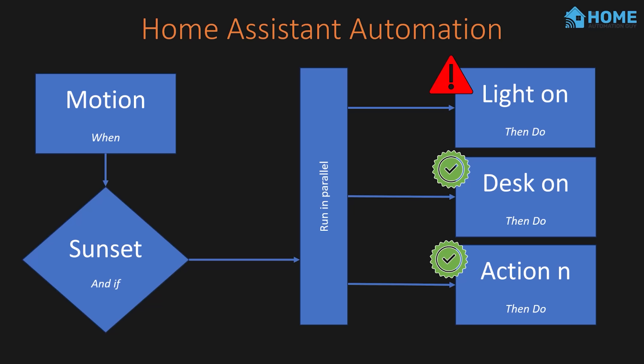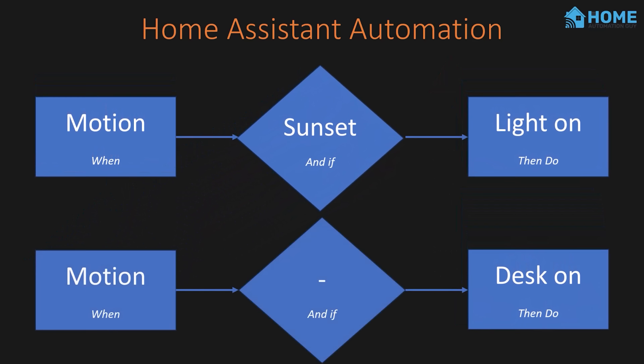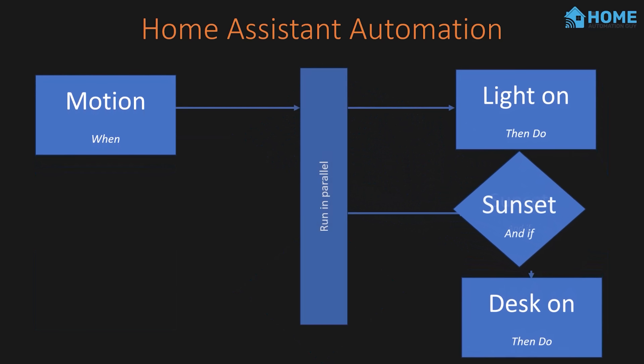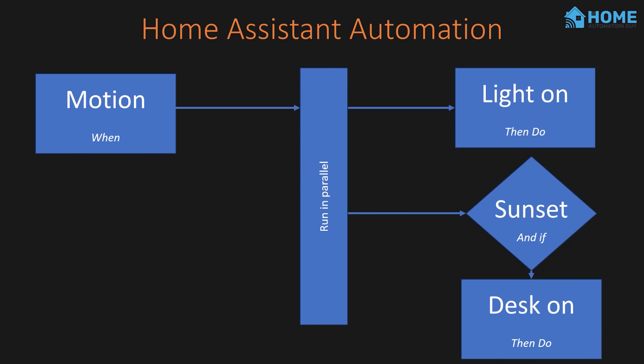So let's extend this automation a bit more. At the moment, this automation only turns on the lights and powers my desk up if I walk into the office after sunset. It doesn't do anything at all during the day because of the 'and if' condition. You can imagine a world where I would want my desk to always power up when motion is detected, but only want the lights to come on if it's after sunset. Of course we could create two automations here — one with a condition for the lights, and one that has no condition and always turns on the desk power. Or we can keep our office automations consolidated and simply move the sunset condition to apply only to the lights action.